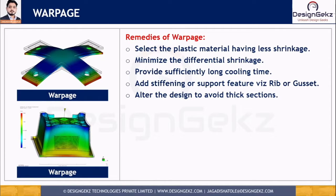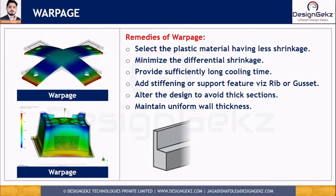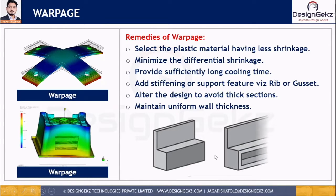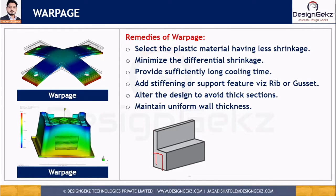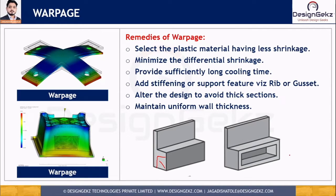We can alter the design to avoid thick sections and maintain uniform wall thickness so it will solidify uniformly. In this diagram, the part has non-uniform thickness — we can make it uniform by coring out. If the customer wants uniform thickness, we can remove material from one side. If the customer wants both sides flat, we can remove material from the middle portion to maintain uniform thickness throughout.